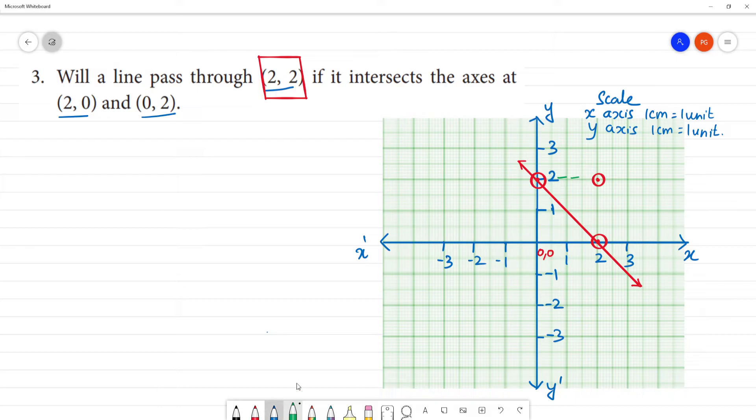No. So this point at (2,2) - this line, when it's joined, when (2,0) and (0,2) are connected...